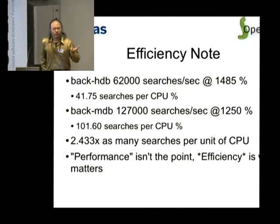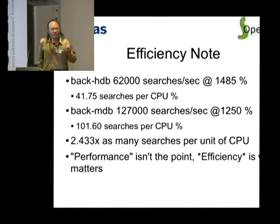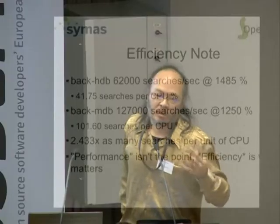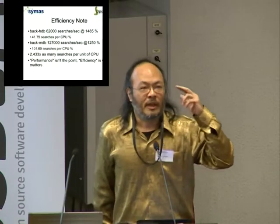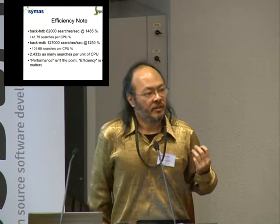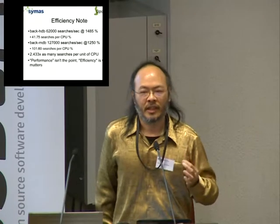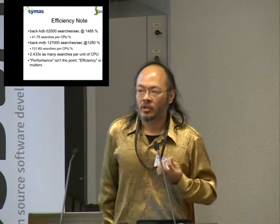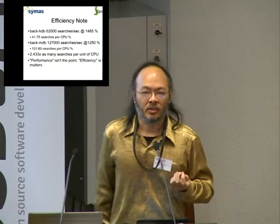To compare LMDB to Berkeley DB: if you look at how much work we're getting done per cycle of CPU time, with Berkeley DB you get 41 searches per percentage of CPU, and with LMDB we were getting 101 searches per percentage. A lot of times people talk about high performance code, but the point here is we're not aiming for the highest performance — we're aiming for the highest efficiency, to get the most possible work done out of the smallest unit of resources.